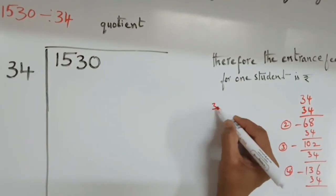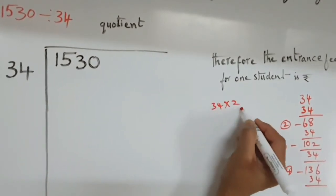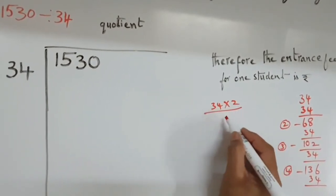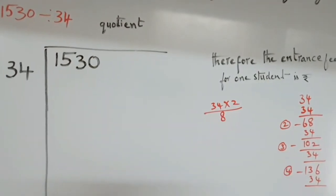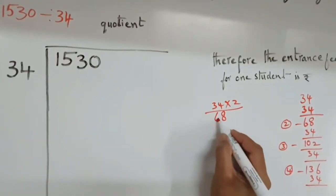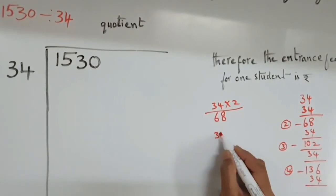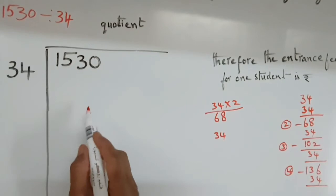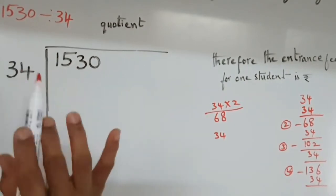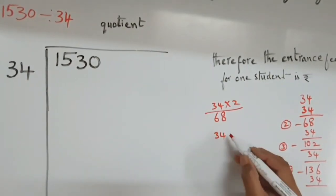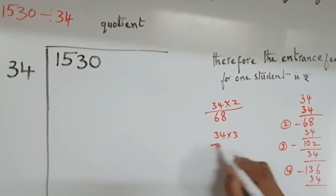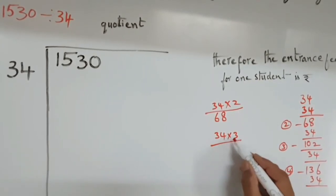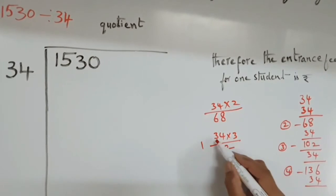Or you can multiply. 4. 4, 2 fours are 8. Then, 2 threes are 6. Now, again. We want 153 or 152. 3. 3 fours are 12. 3 threes are 9. Plus 1, 10.